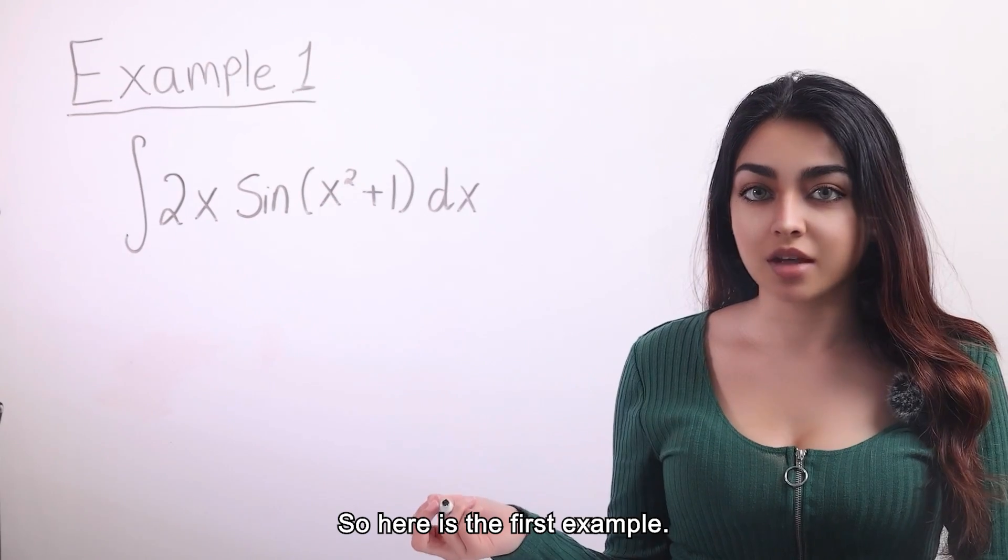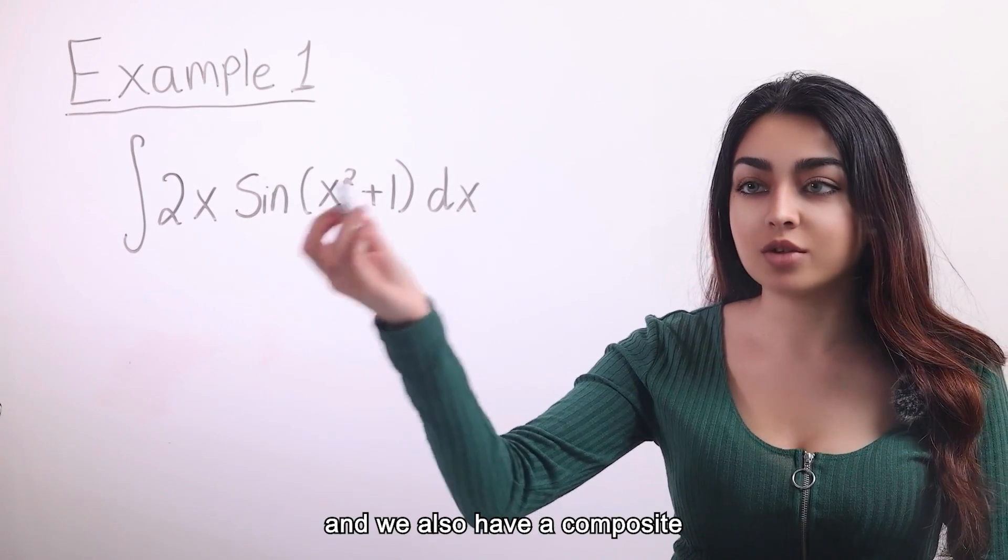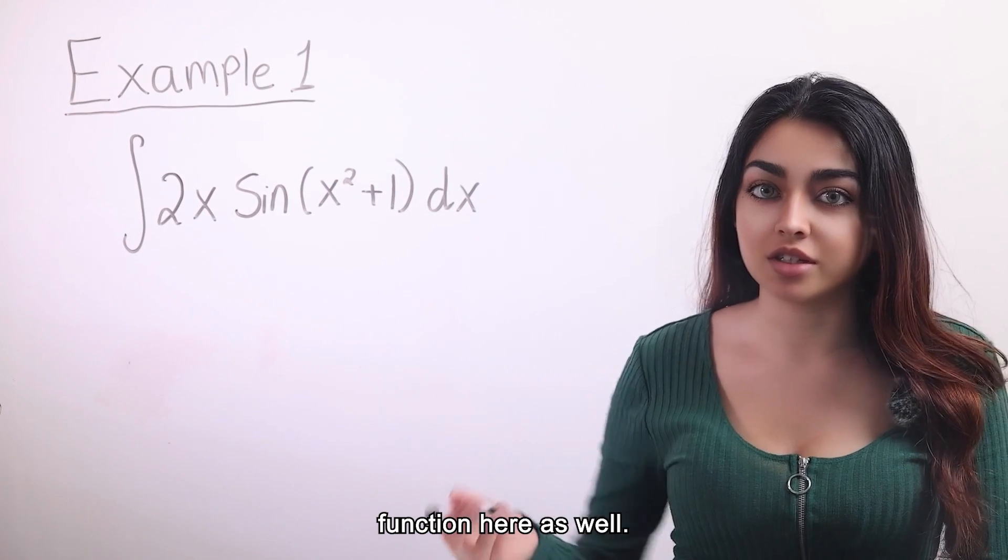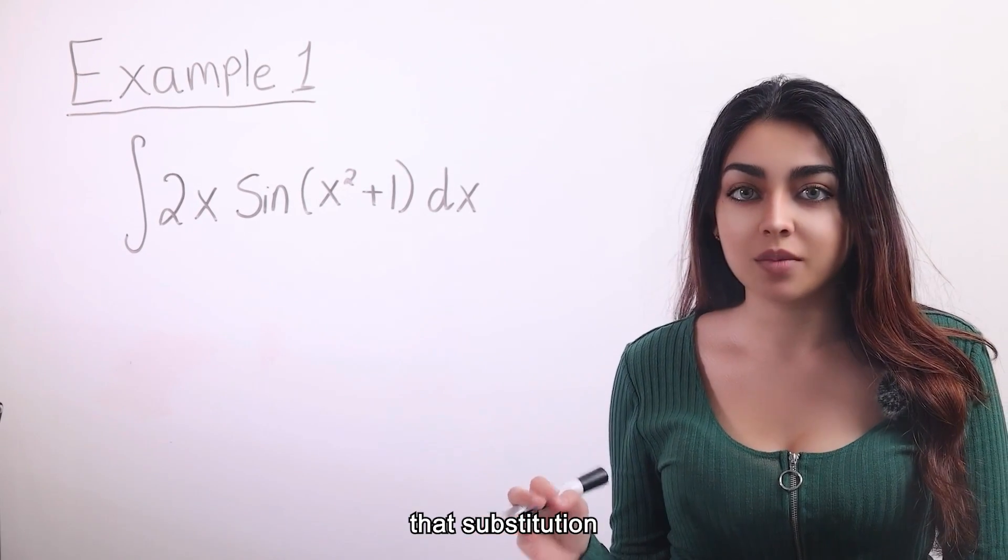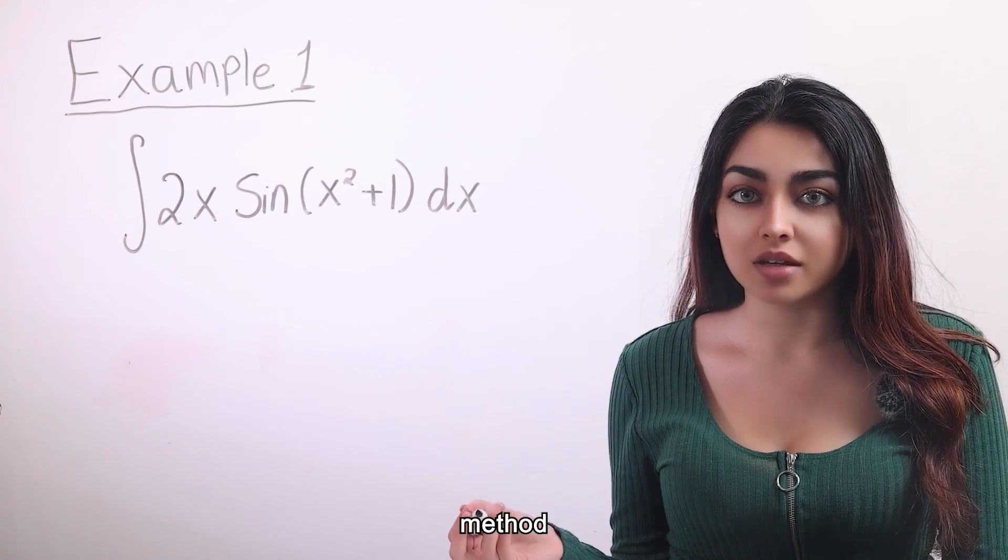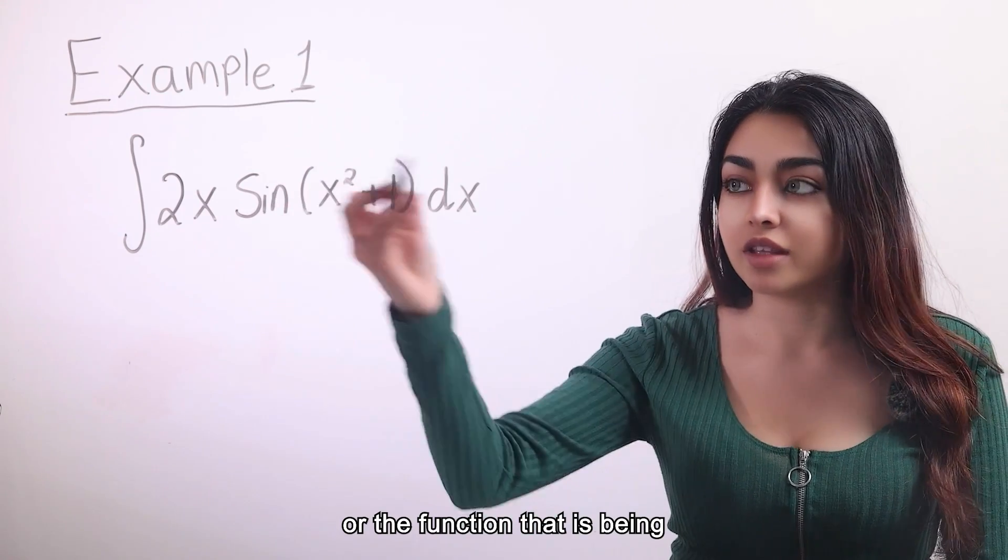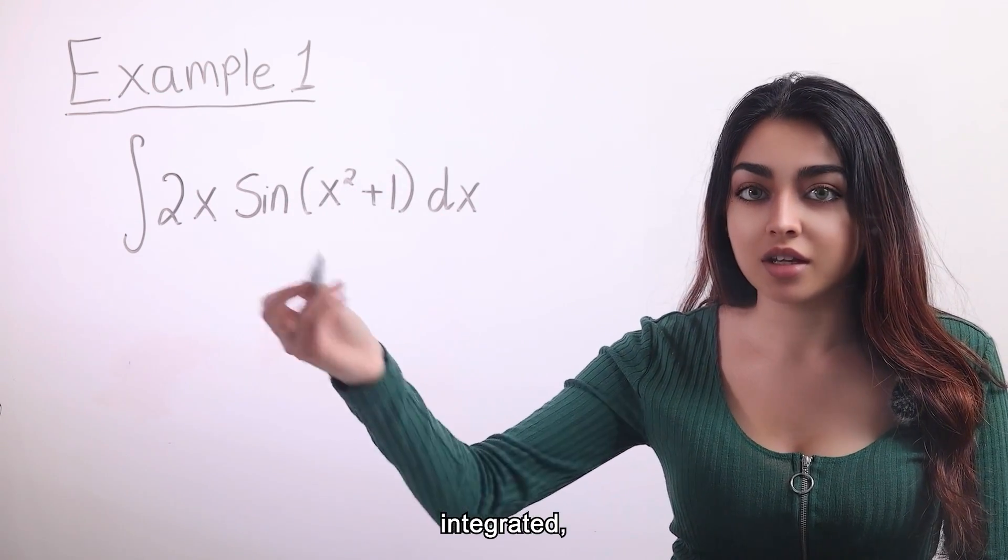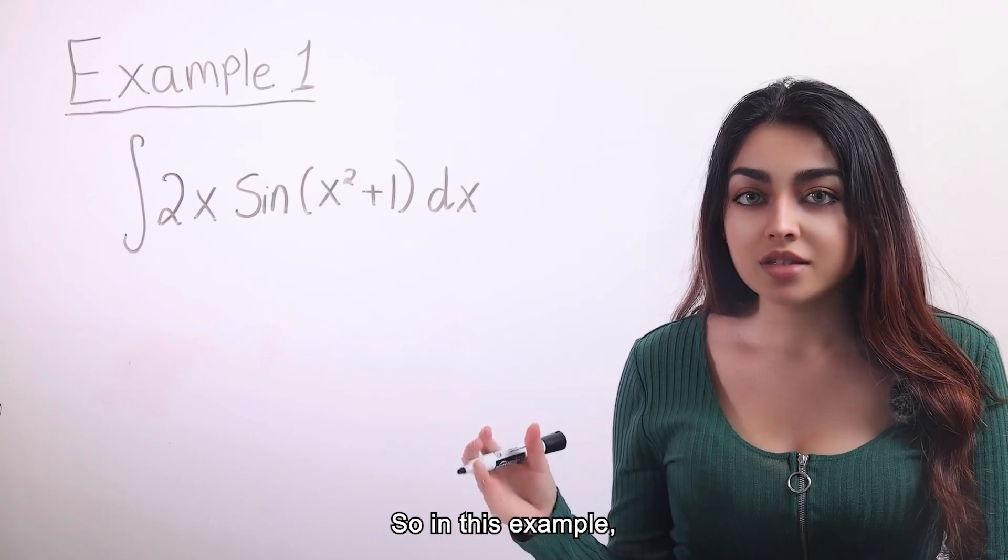So here's the first example, we can see that we have some trig here with the sine and we also have a composite function here as well. And seeing this is an indication that substitution might come in handy. The integration by substitution method allows us to change the variable of integration so that the integrand or the function that's being integrated is integrated in an easier manner.